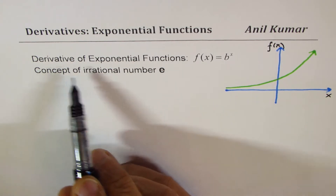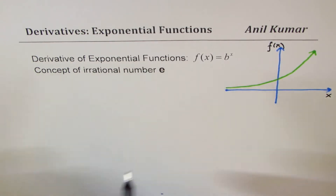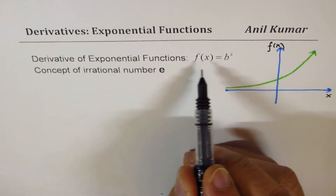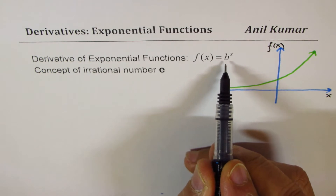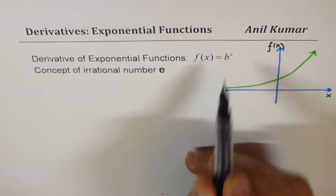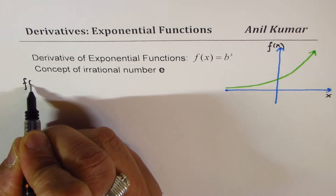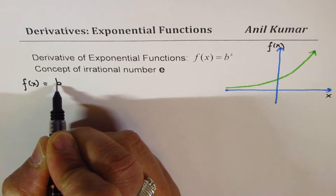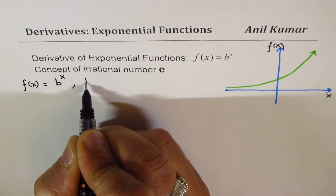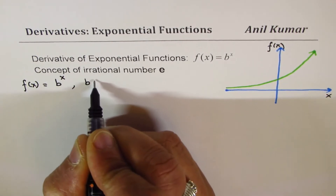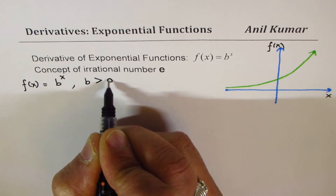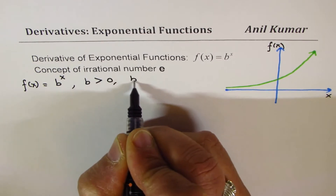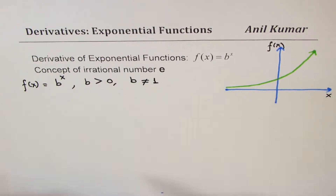We'll consider the derivative of an exponential function in general: f of x equals b to the power of x, where b has to be greater than 0 and b is not equal to 1. So that is the function we are talking about.